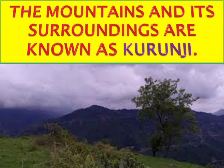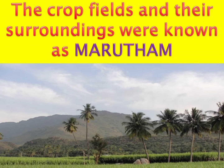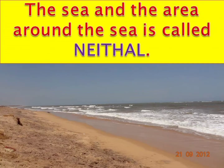The mountains and its surroundings are known as Kurunji. The forest region is referred as Mullai. The crop fields and their surroundings were known as Marudam. The sea and the area around the sea is called Neithal.